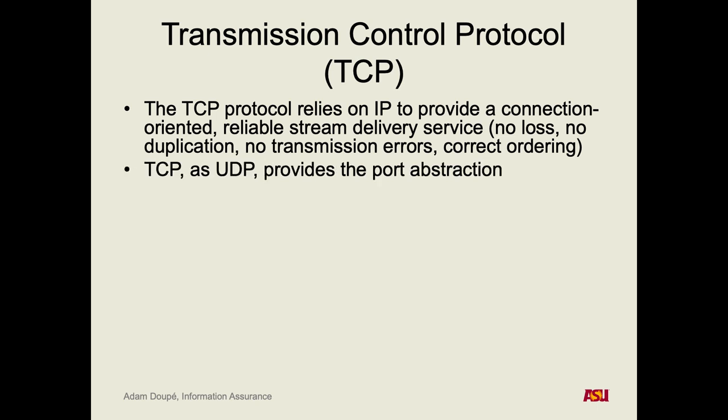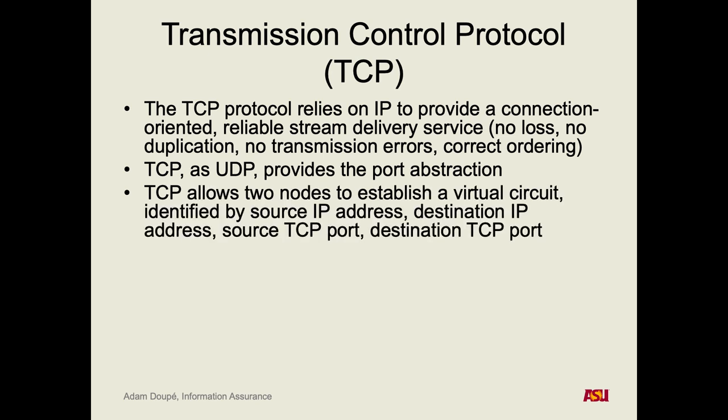TCP also means no duplication, no transmission order errors, and the other side gets the data in the correct order. These are very good things you want from a networking protocol. If I send you a request saying 'give me google.com,' I don't want the packet to arrive scrambled. TCP also provides a port abstraction. The key concept specifying a connection is a four-tuple: source IP, destination IP, source port, destination port.